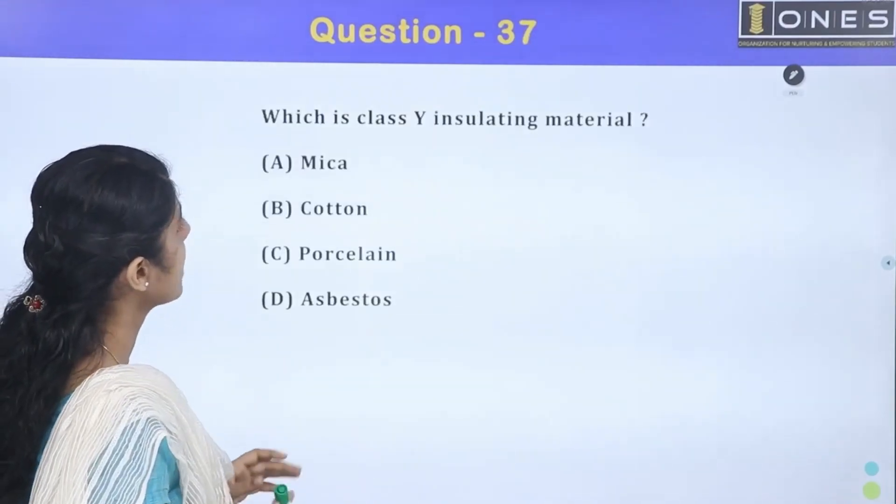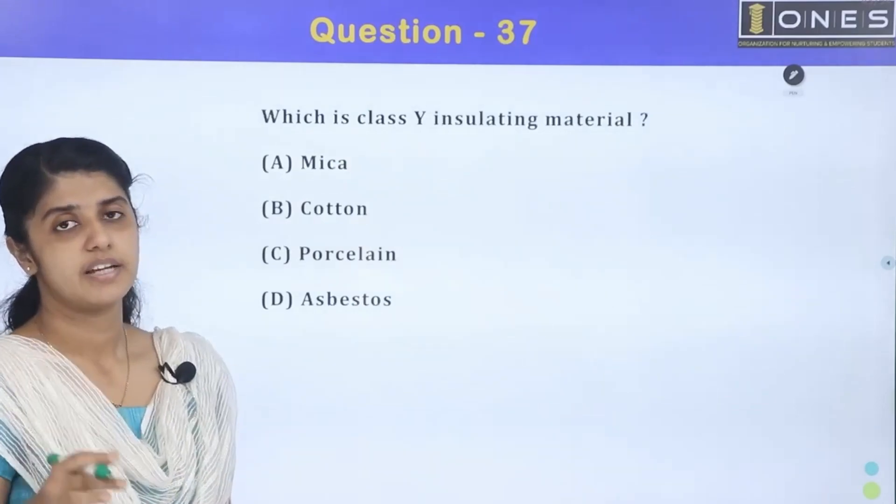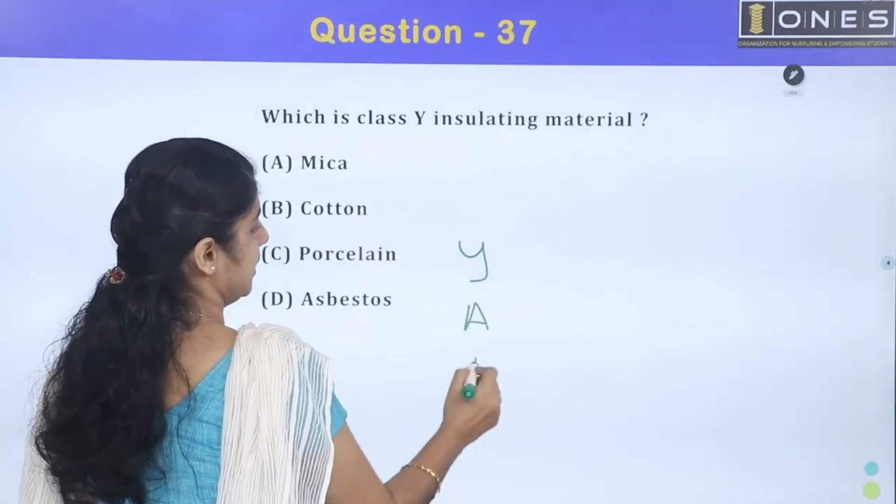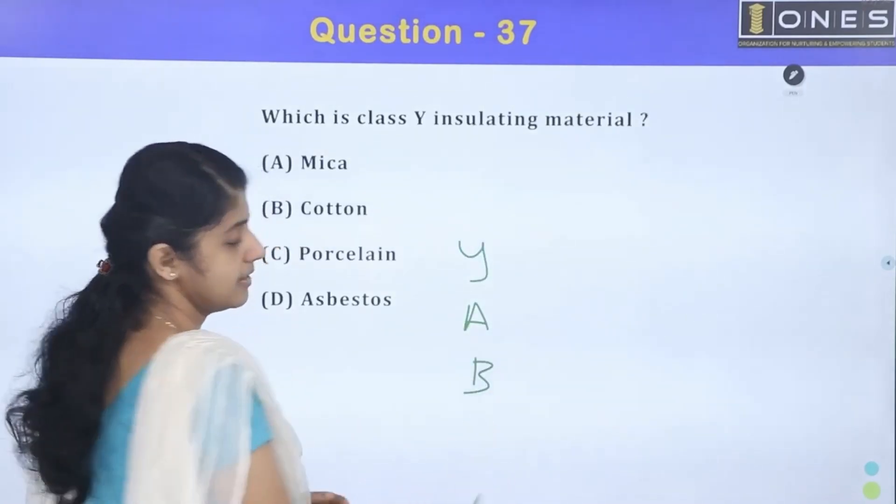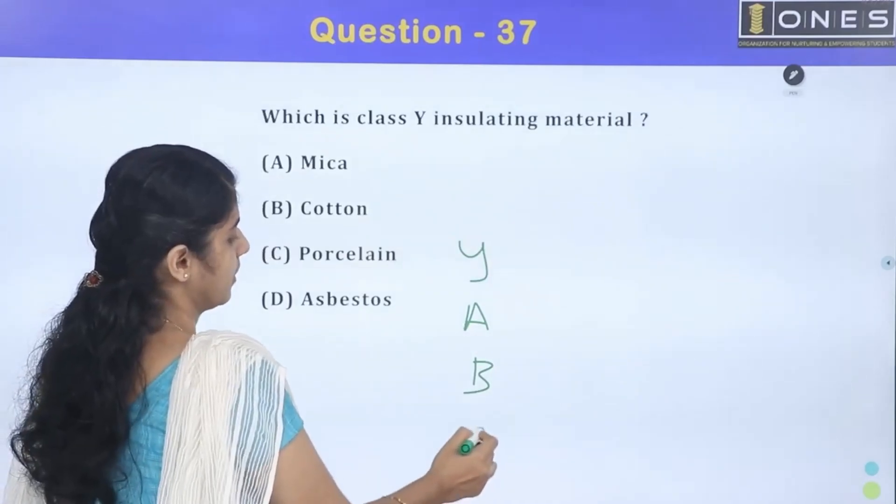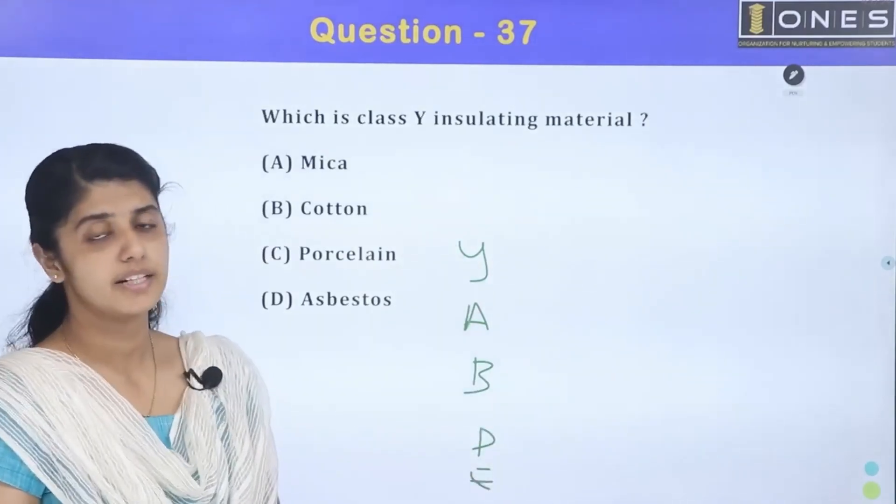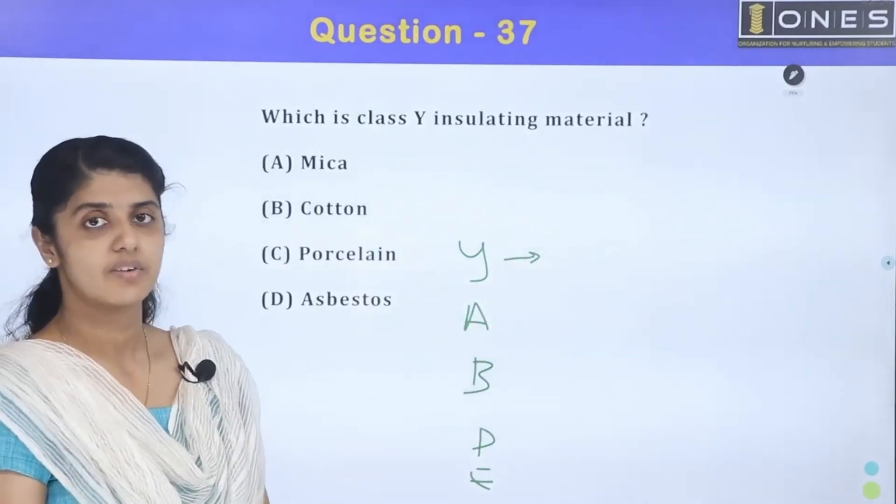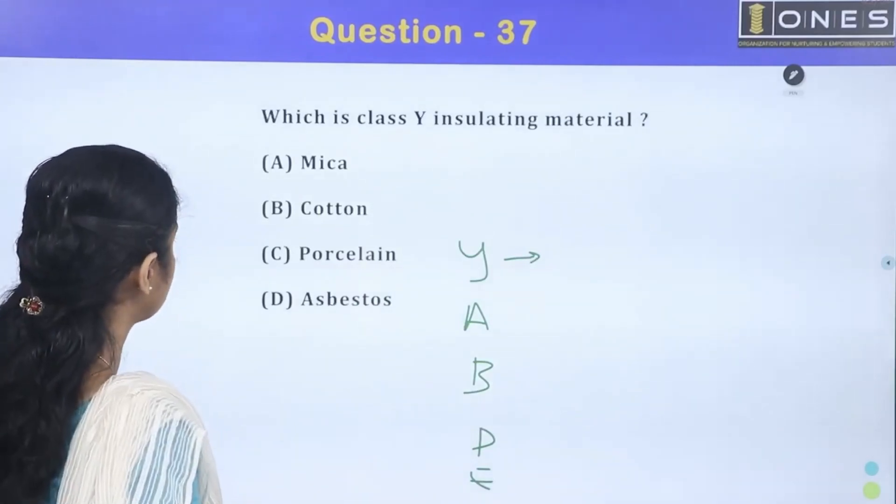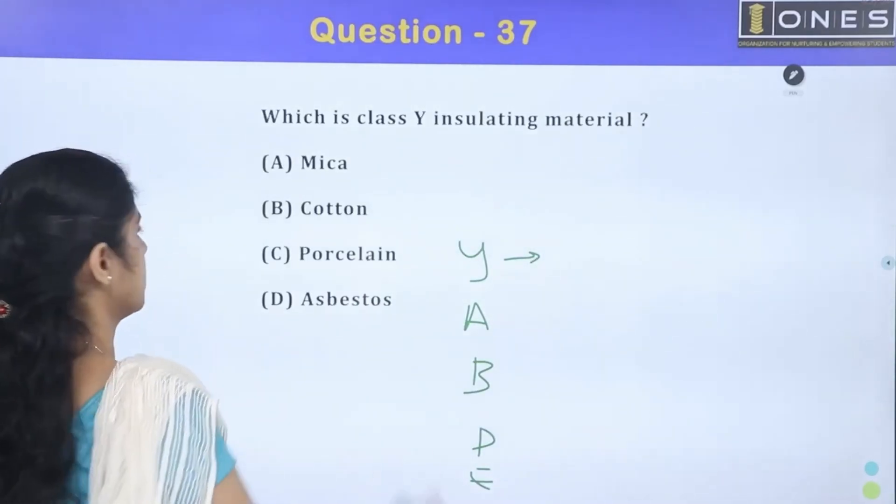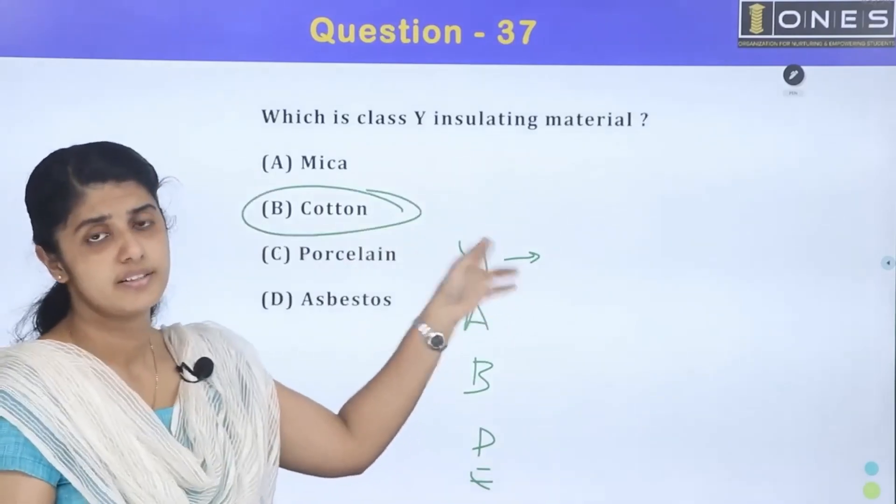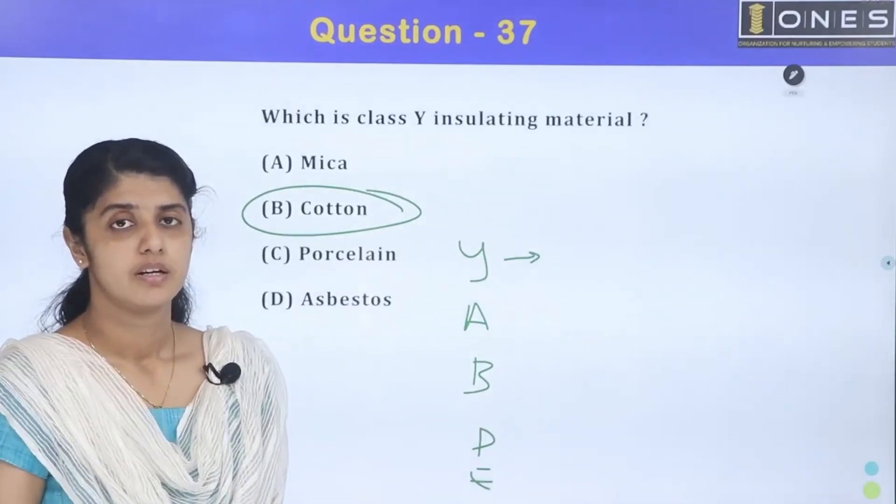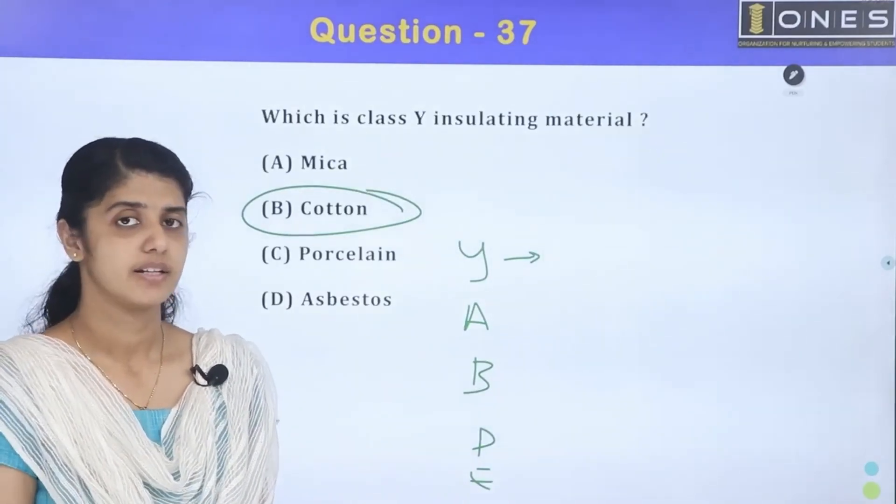Which is Class Y insulating materials? Class Y insulating materials are divided into different classes: Y, A, B, C, D, E. These classes are based on temperature ratings. For Class Y, we consider the high temperature coefficient of resistance.